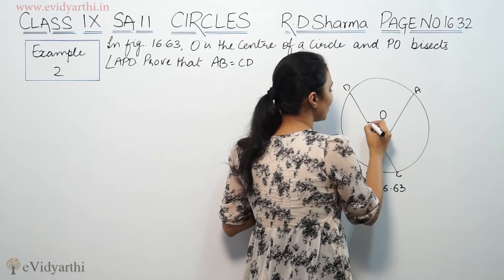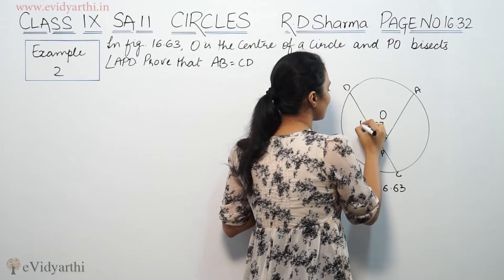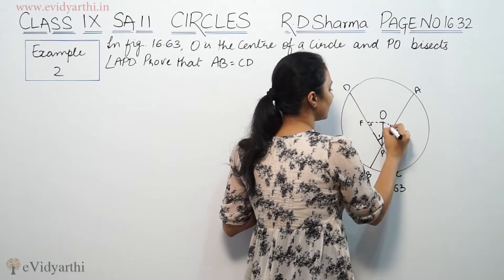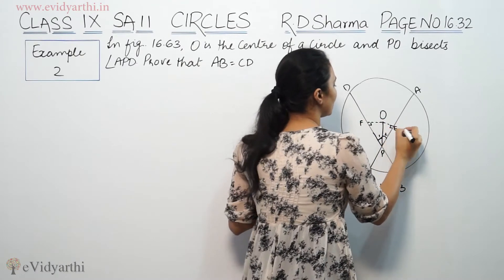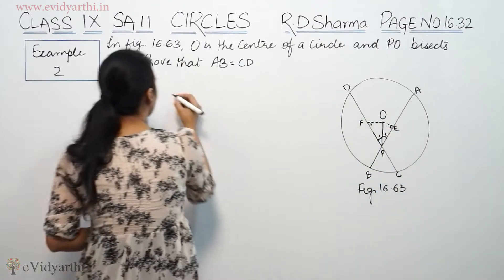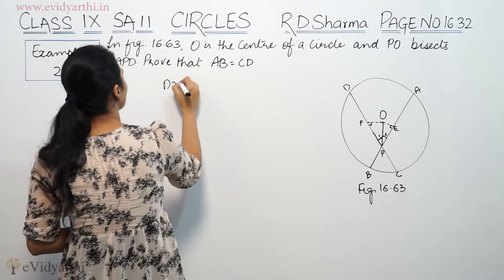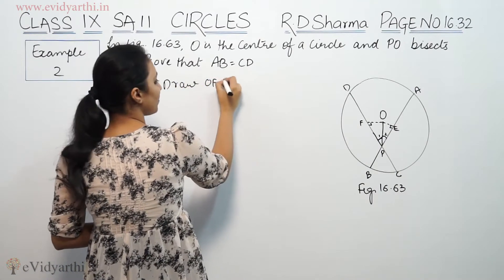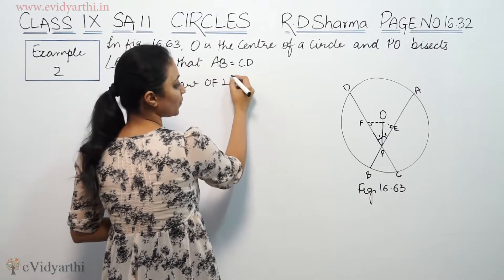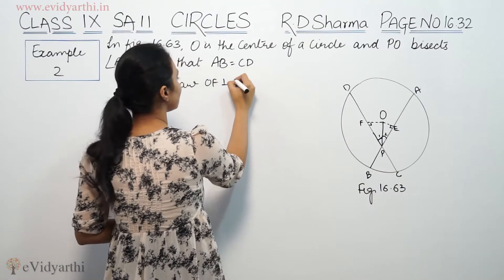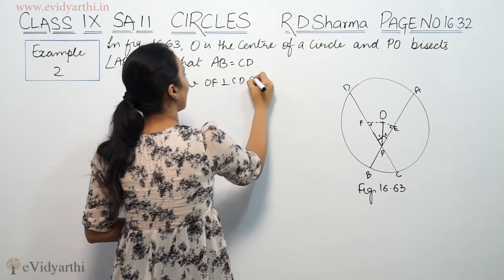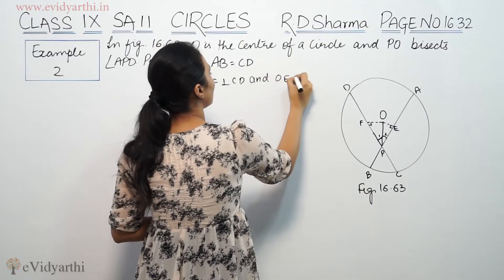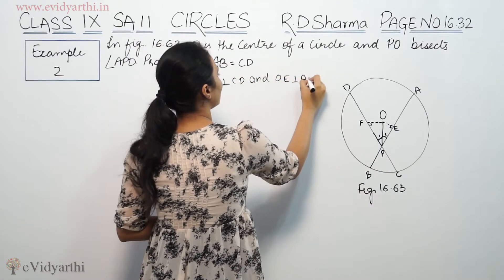So we draw perpendiculars from the center. Suppose this is OF and this is OE. OF is perpendicular to CD and OE is perpendicular to AB.